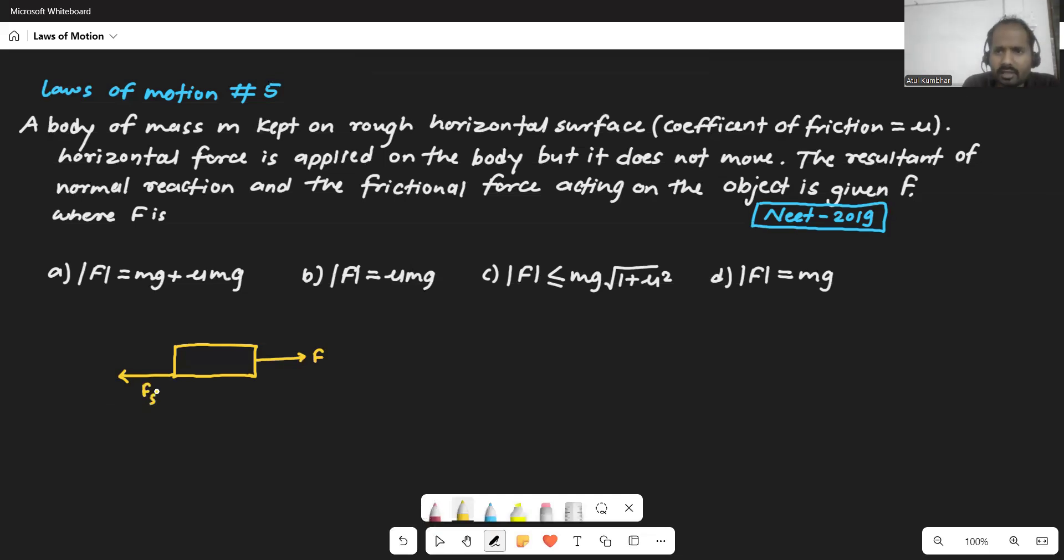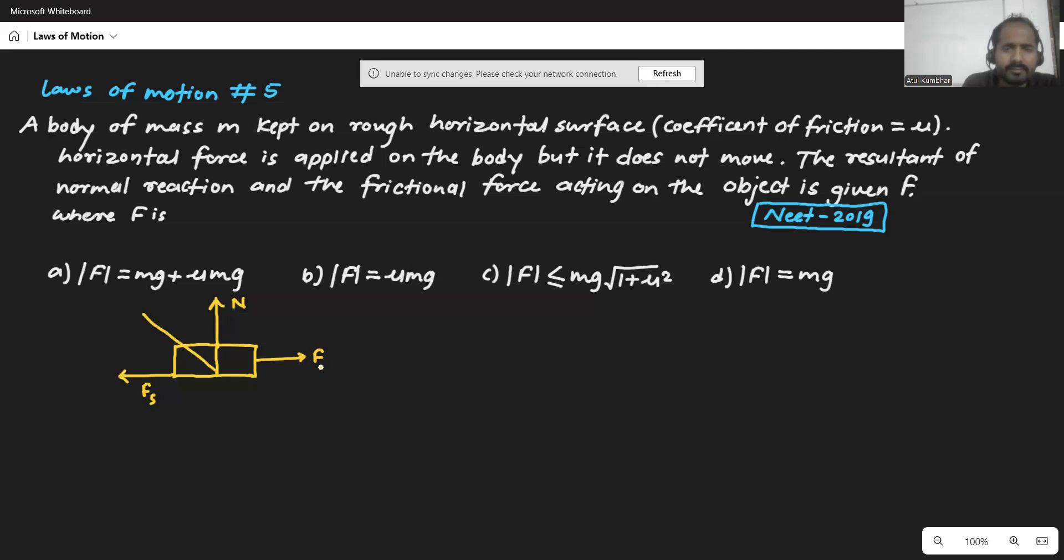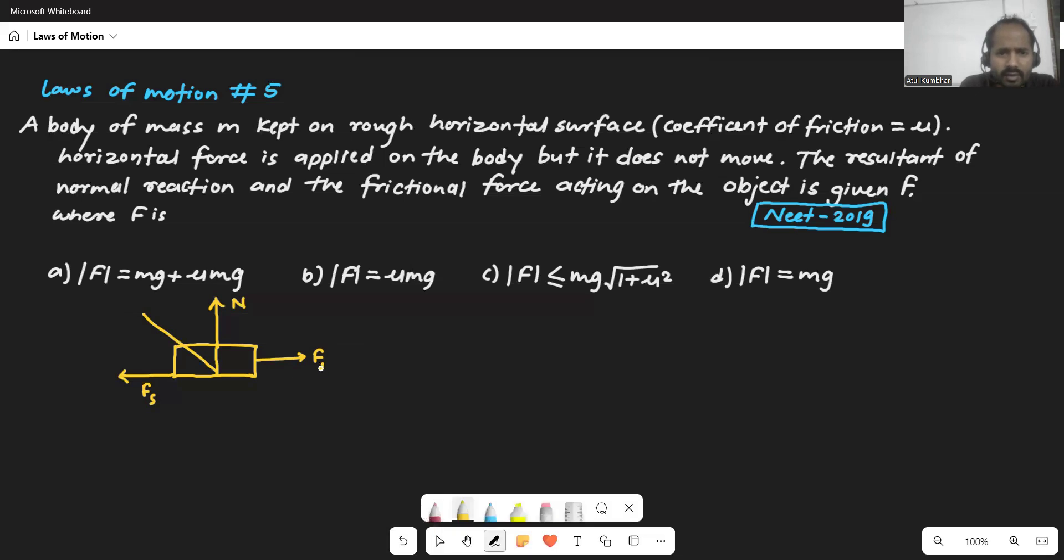Now what they are asking, they are asking us to find out the resultant normal reaction. So there is a normal reaction N here. So we need to find out the resultant of that normal reaction and the friction force. Let's say that is F as the resultant of the normal reaction and friction is given as F here.